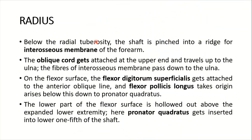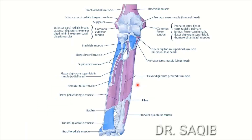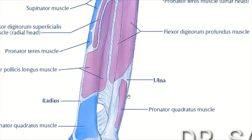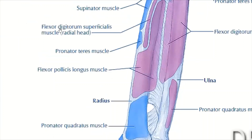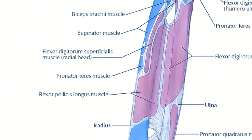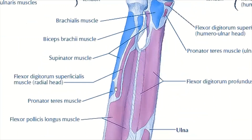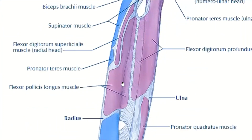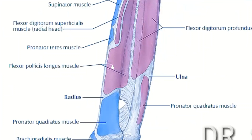Below the radial tuberosity, the shaft is pinched into a ridge for the interosseous membrane of the forearm. The oblique cord gets attached to the upper end and the fibers of the interosseous membrane pass down to the ulna. On the flexor surface, flexor digitorum superficialis gets attached to the anterior oblique line, and flexor pollicis longus arises below this down to the pronator quadratus. Here you can see the flexor digitorum superficialis and flexor pollicis longus on the radius.